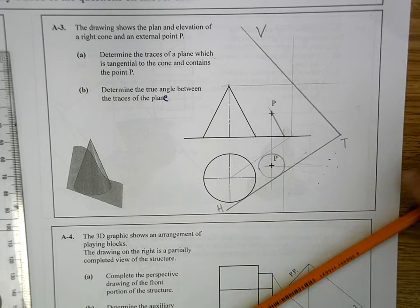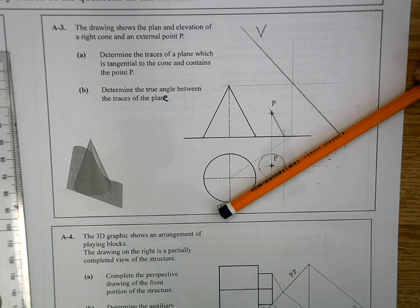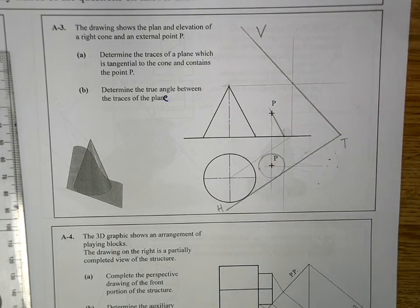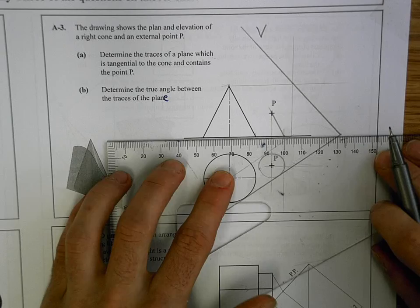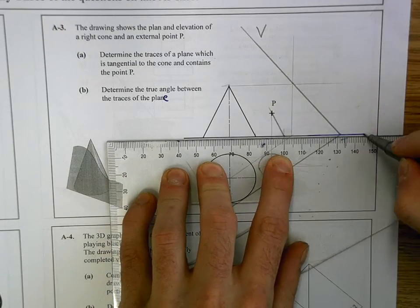Now yesterday we said there were two methods for this. You can look along a horizontal trace and create an auxiliary view, or you can do the rotation method. So seeing as we did the first method yesterday, we'll do the rotation method today.